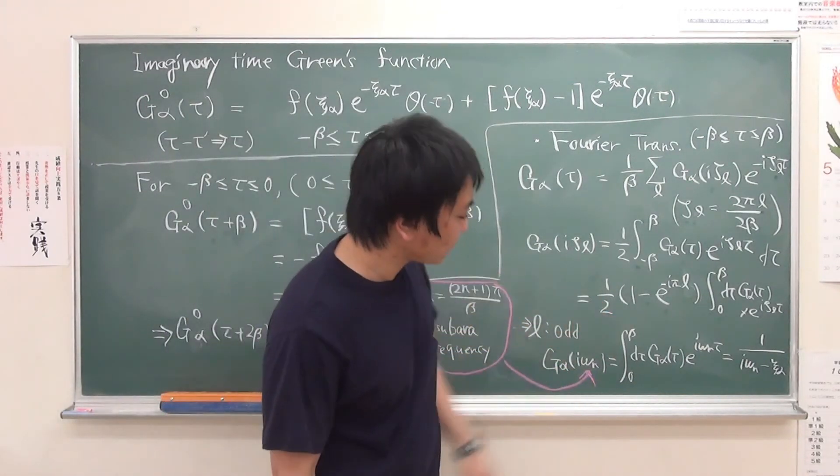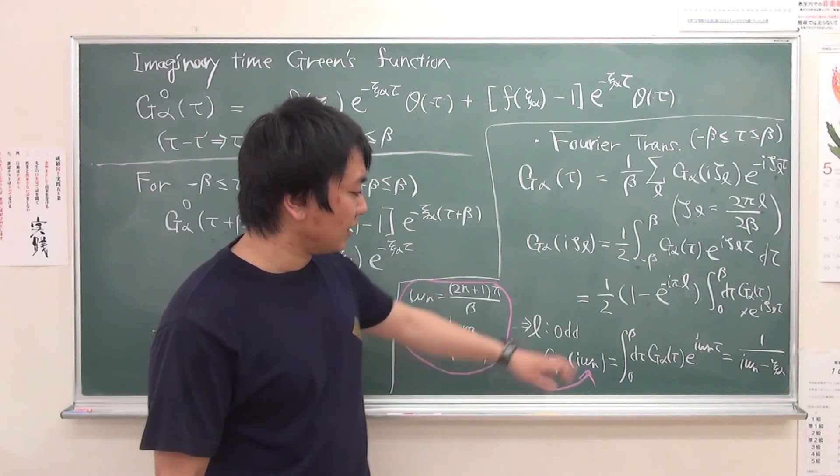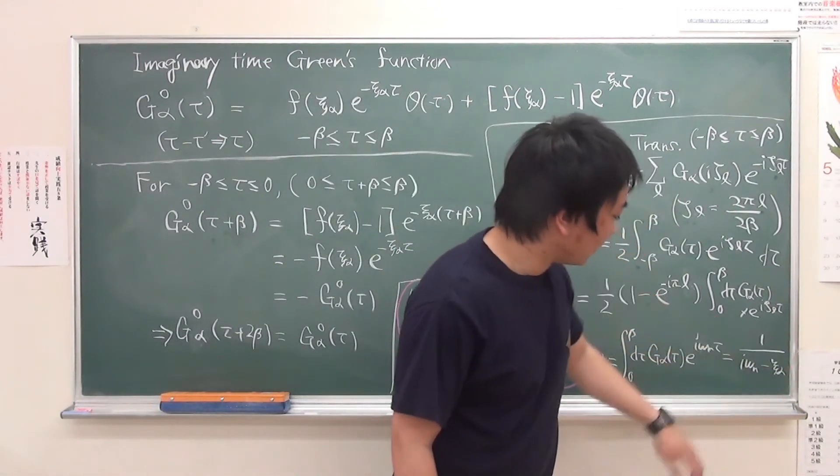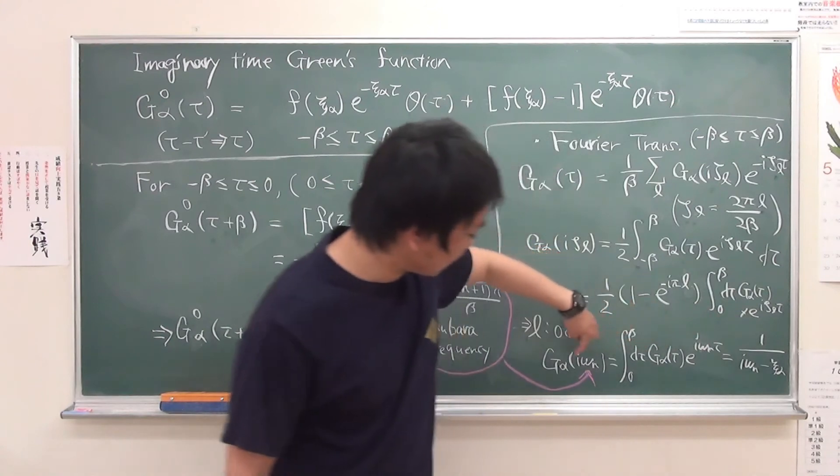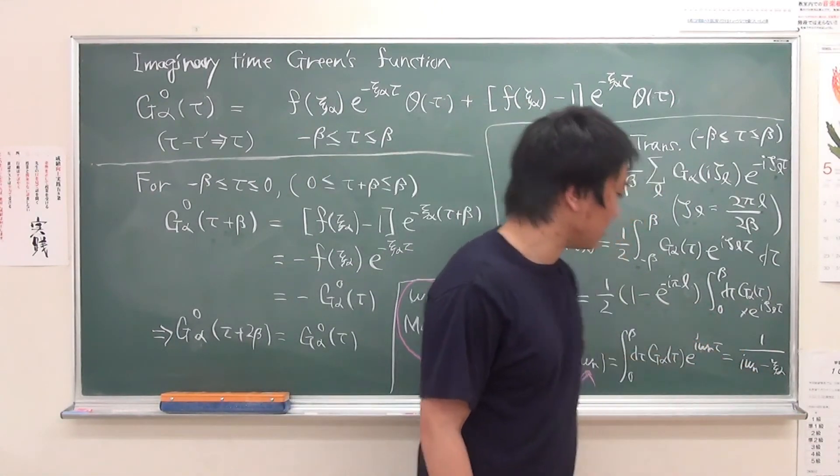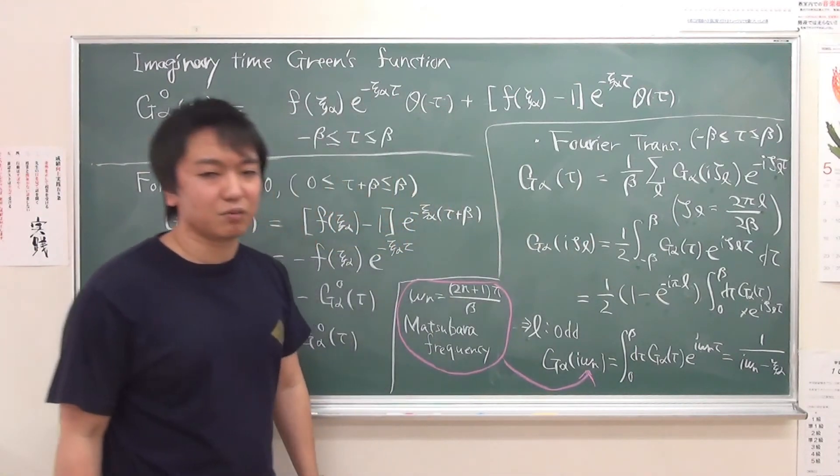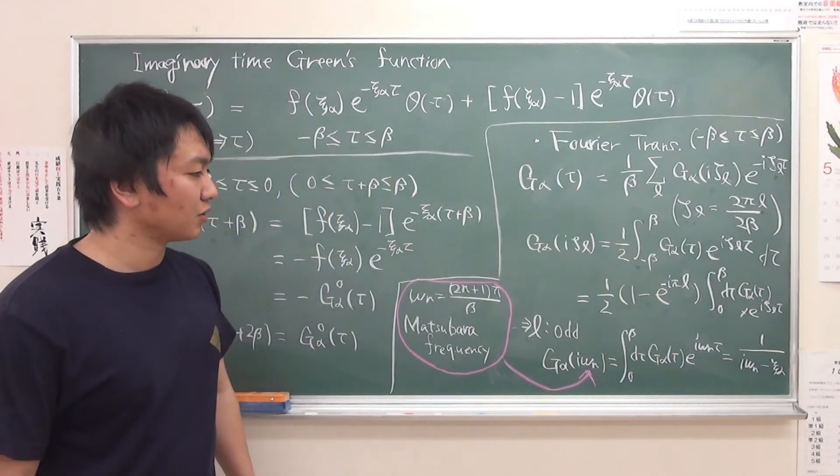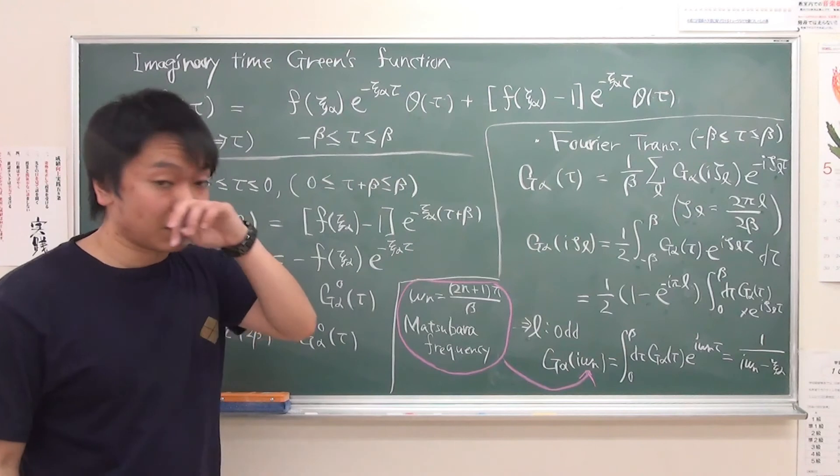And so we can easily obtain in a non-interacting case, this Matsubara Green's function is given by 1 over i omega_n minus epsilon alpha. This is sometimes useful to consider expansion, calculation of some dynamic quantities.